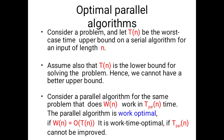Now we will see optimal parallel algorithms. Consider a problem and let T(n) be the worst-case time upper bound on a serial algorithm for an input of length n. Assume that T(n) is the lower bound for solving the problem, so we cannot have a better upper bound. Consider a parallel algorithm for the same problem that does W(n) work in T(n) time. The parallel algorithm is work-optimal if W(n) = O(T(n)). It is work-time optimal if T(n) cannot be improved.